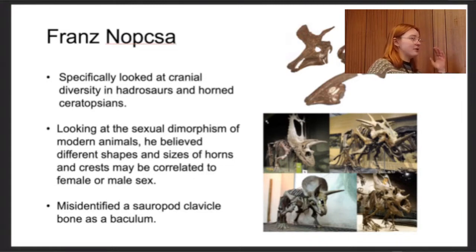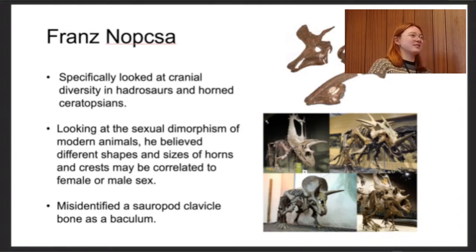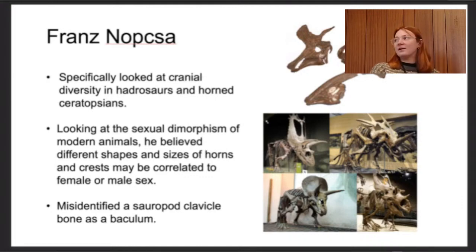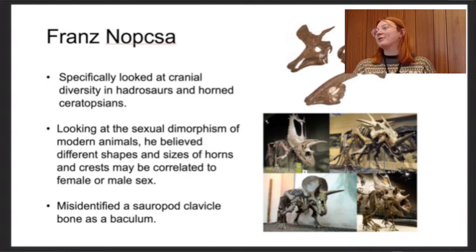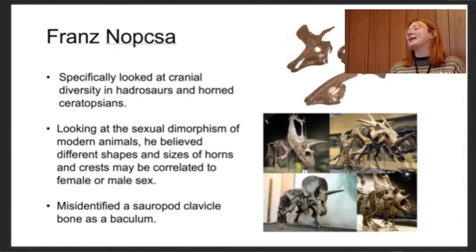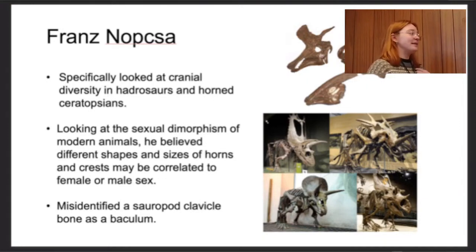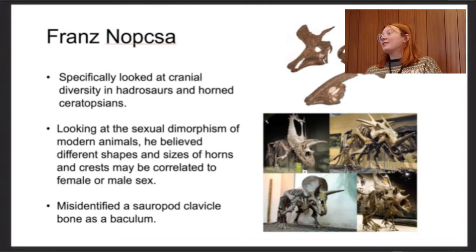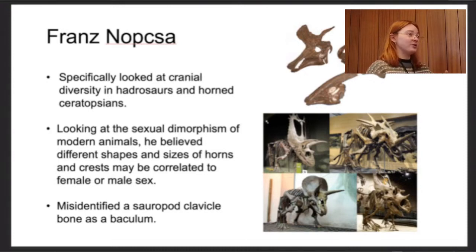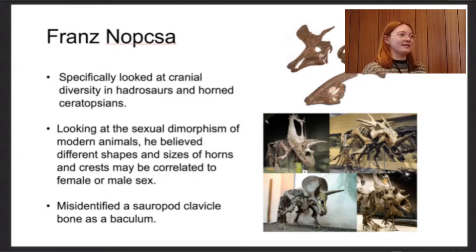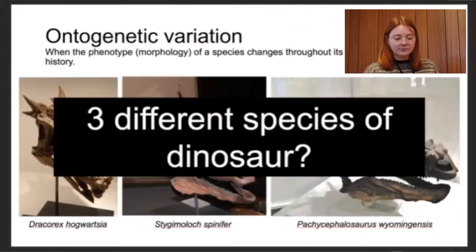Nopcsa believed different shapes could indicate male or female based on comparisons with modern animals, but this has been disputed — it's just not particularly logical. He also misidentified a sauropod clavicle bone as a baculum, which is a penis bone. There are lots of traits that could theoretically be carried through that we might just be missing because they haven't fossilized, and there are massive gaps in the fossil record meaning we can't always make logical findings.